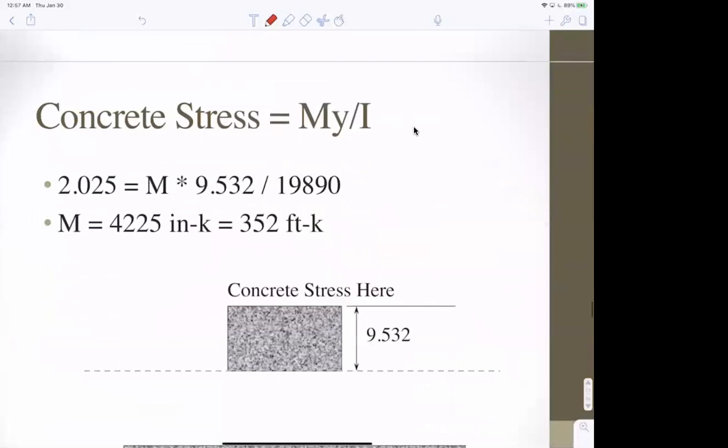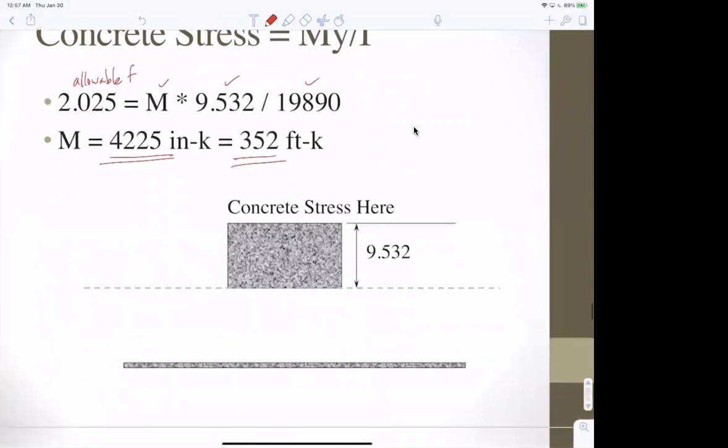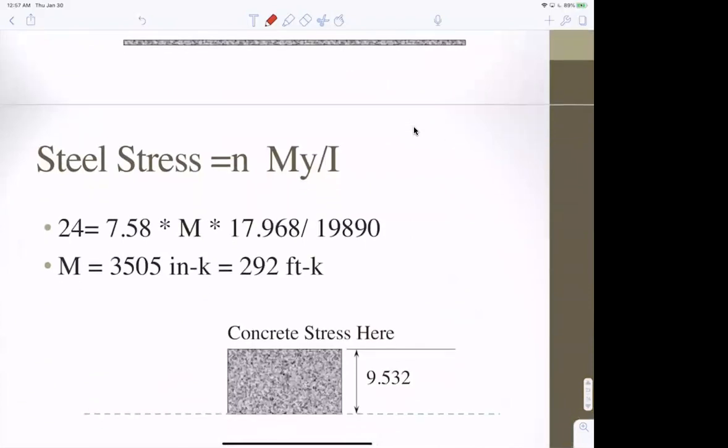Okay. So, the concrete stress is MY over I. This is in kips and inches. And so, the moment that will make the concrete hit 2.03 KSI is 42.25 inch kips divided by 12, 352 foot kips. That's a lot of moment.